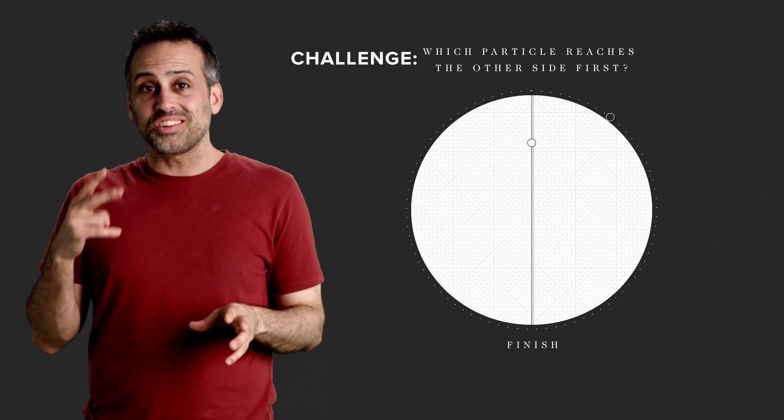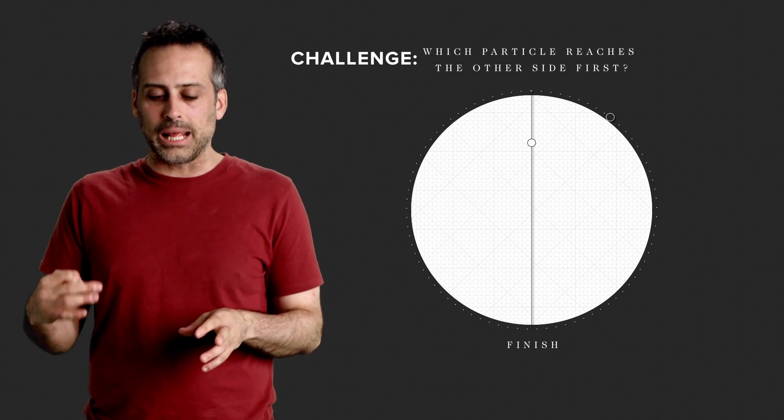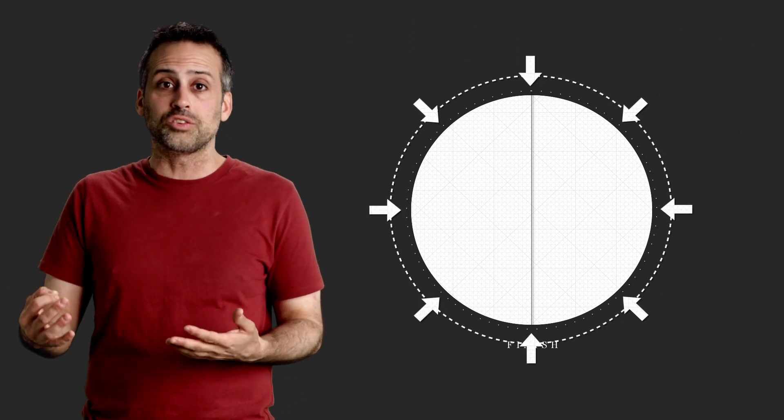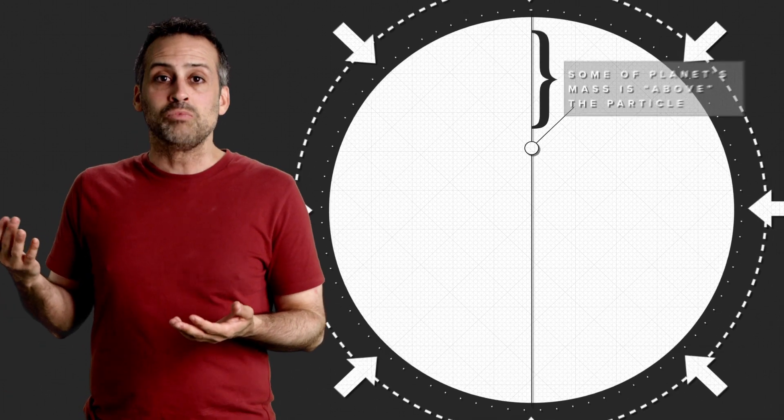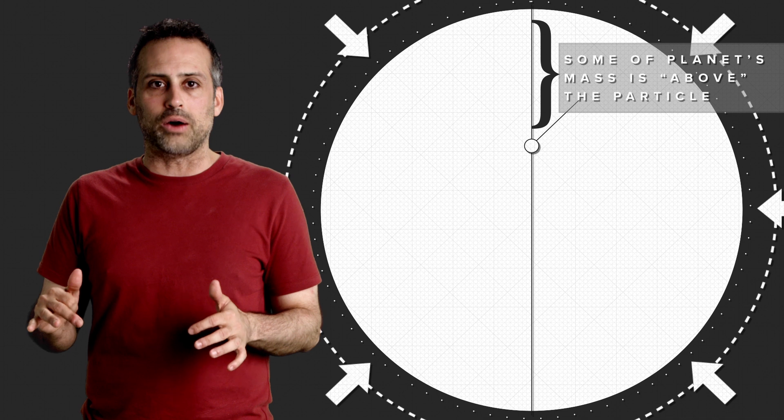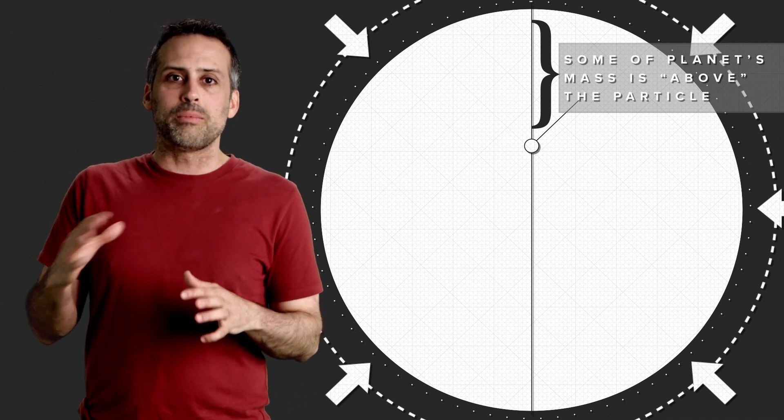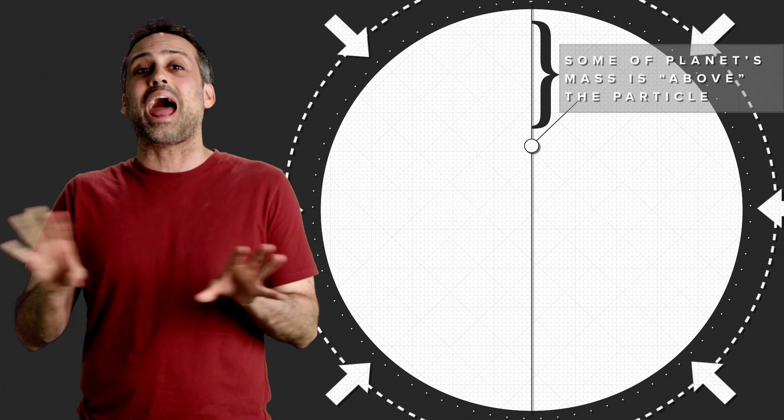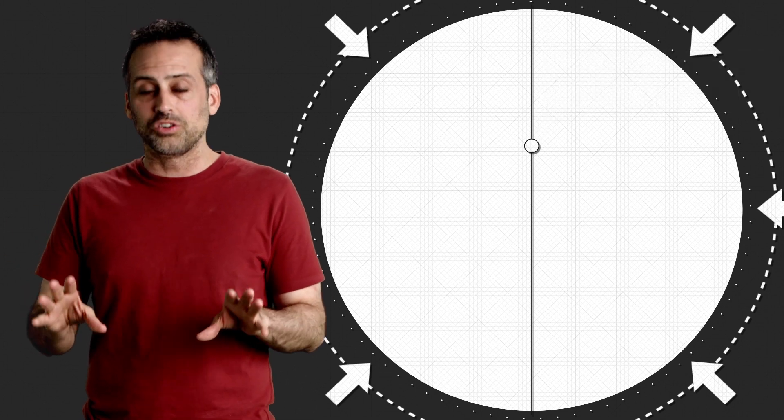Now, there's a small roadblock. When the second particle is inside the planet, how do you calculate the gravitational force on it? After all, as it falls, some of the mass is above it. Well, you can use calculus to figure that out. It's something called Gauss's Law. But let me tell you how that part of the problem works so that you can solve the rest of the problem without calculus, using only algebra. Here's the deal.